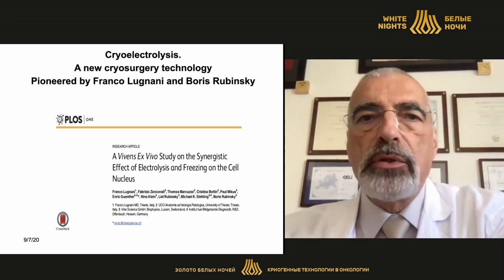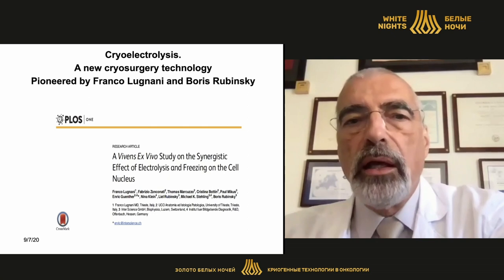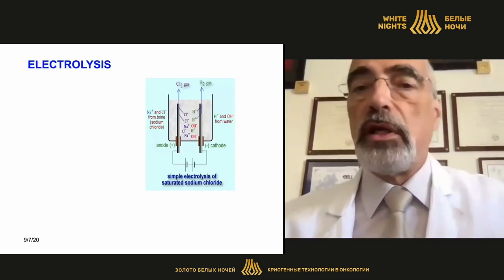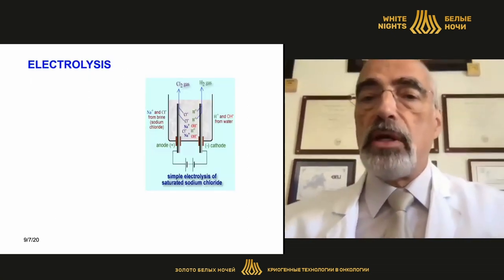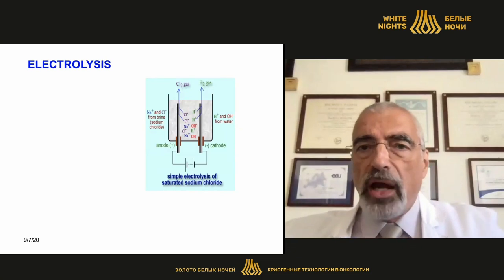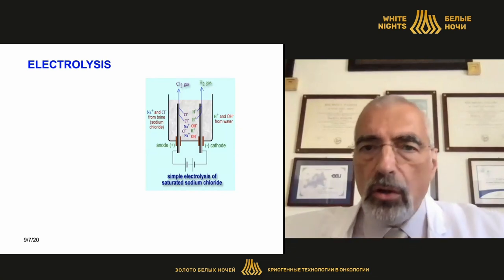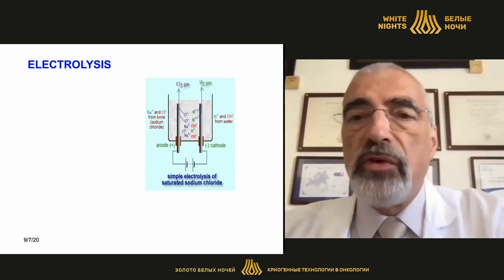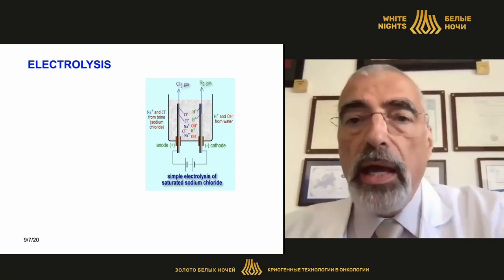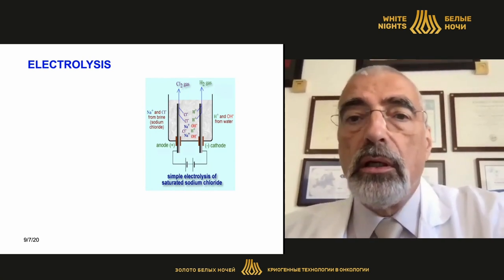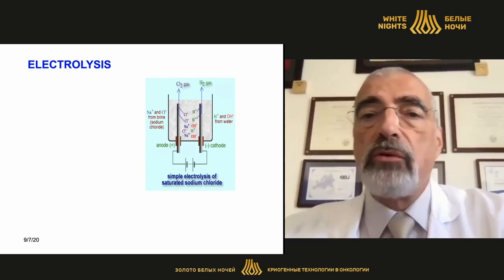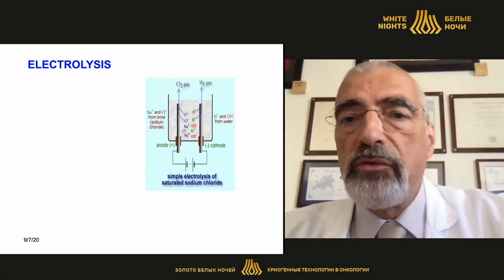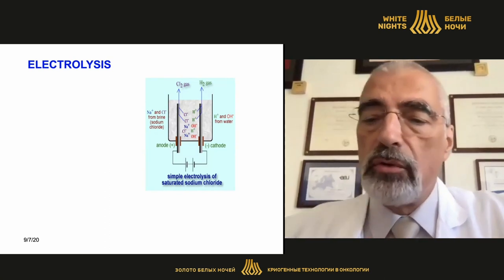Everybody knows electrolysis — it's an old thing, something of 200 years ago or even more. It is very easy to perform, and it releases some ions that are very toxic and very destructive to the tissues. So we can destroy tissue using two simple electrodes.